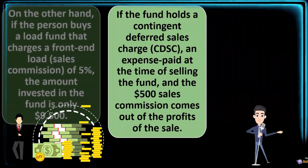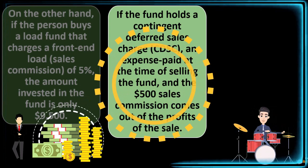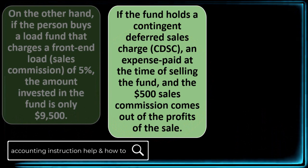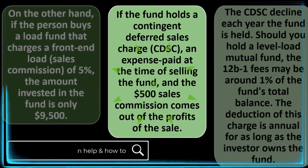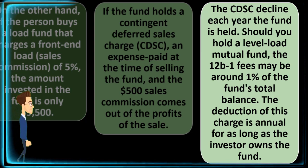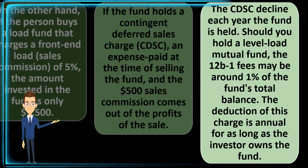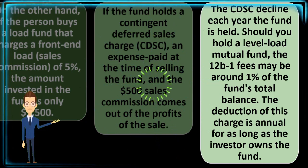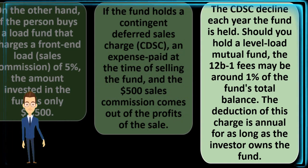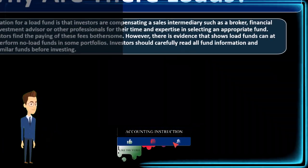If the fund holds a contingent deferred sales charge, otherwise known as a CDSC — an expense paid at the time of selling the fund — the $500 sales commission comes out of the profits of the sale. The CDSC declines each year the fund is held. Should you hold a level load mutual fund, the 12B-1 fees may be around 1% of the fund's total balance, deducted annually for as long as the investor owns the fund.